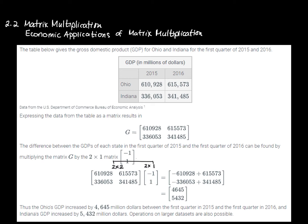You can see that here we have 610,000 times negative one plus 615,000 times positive one. So there's my negative 610,000 plus 615,000.